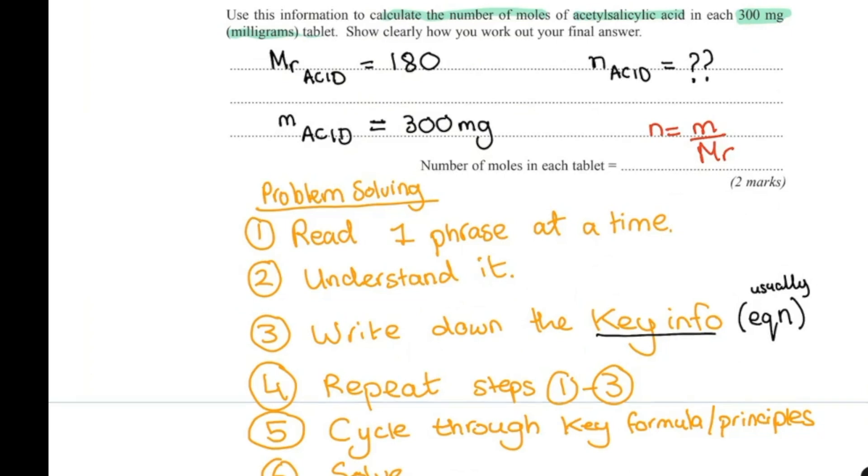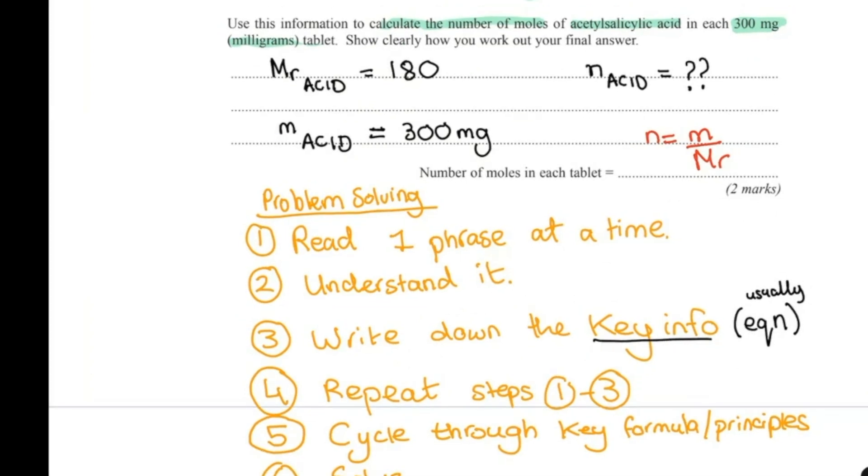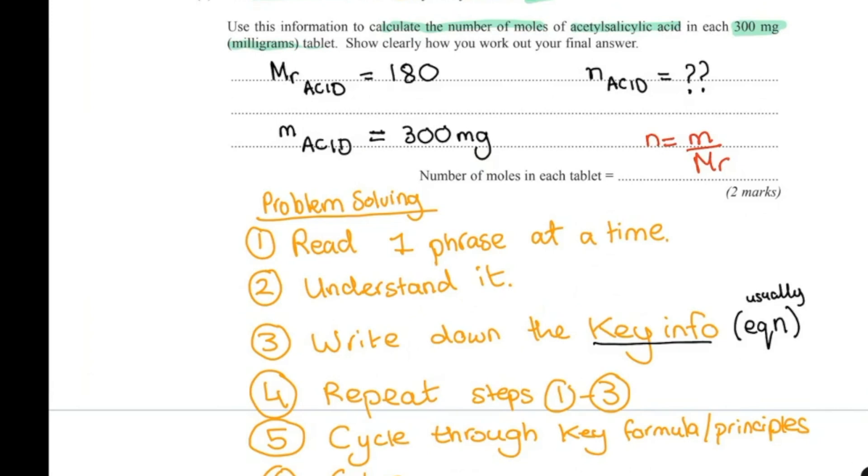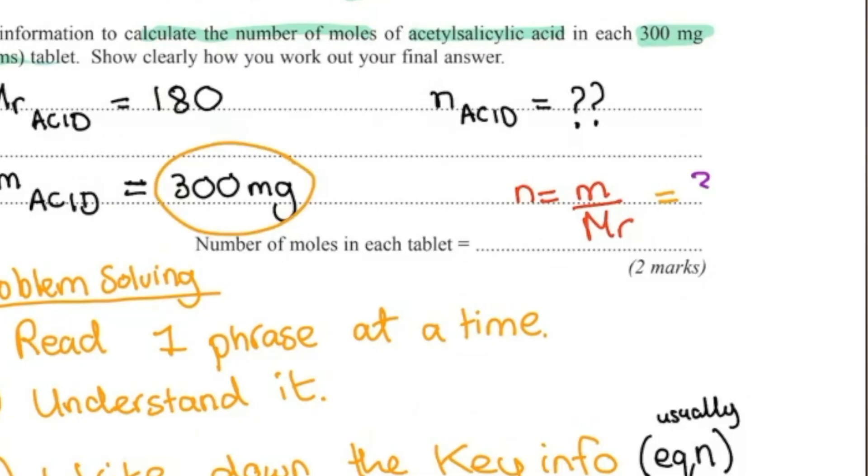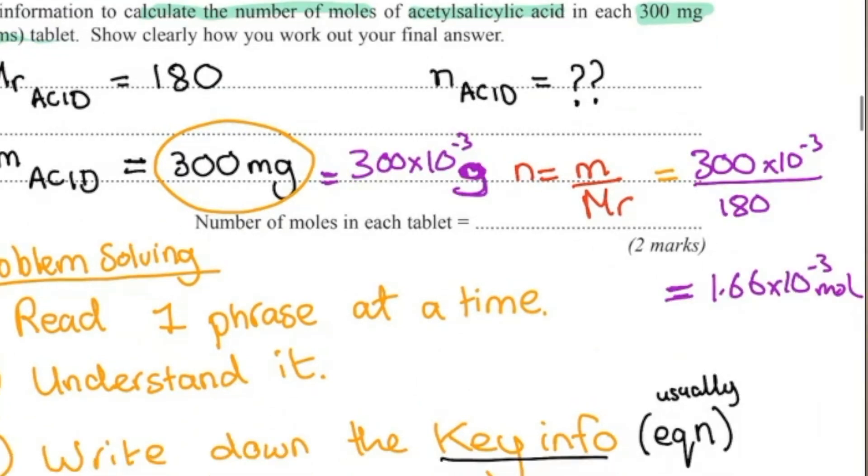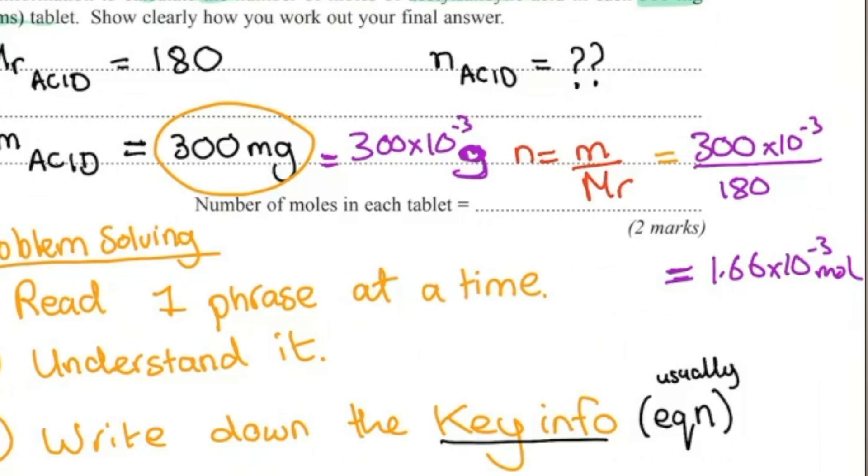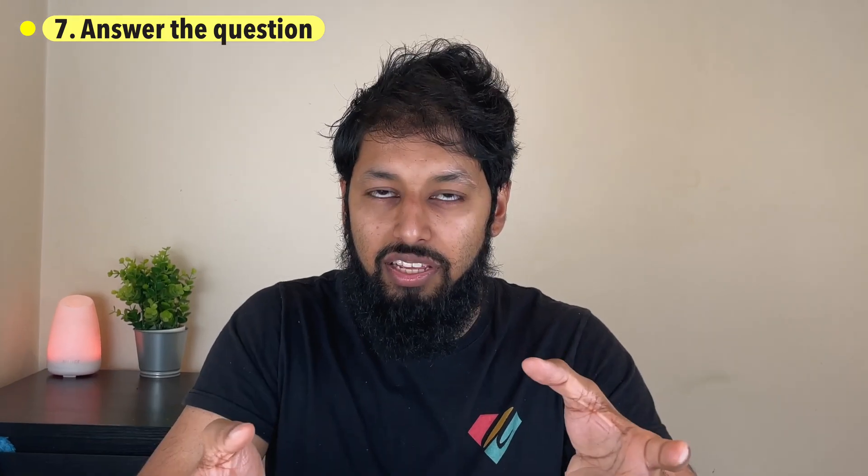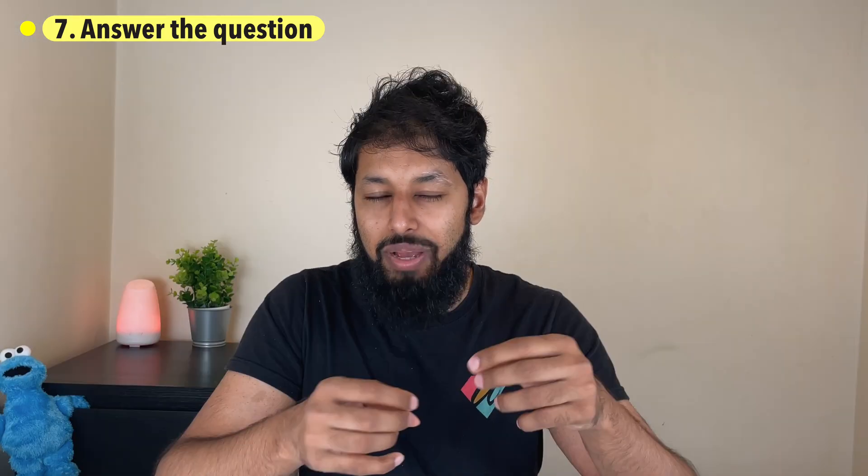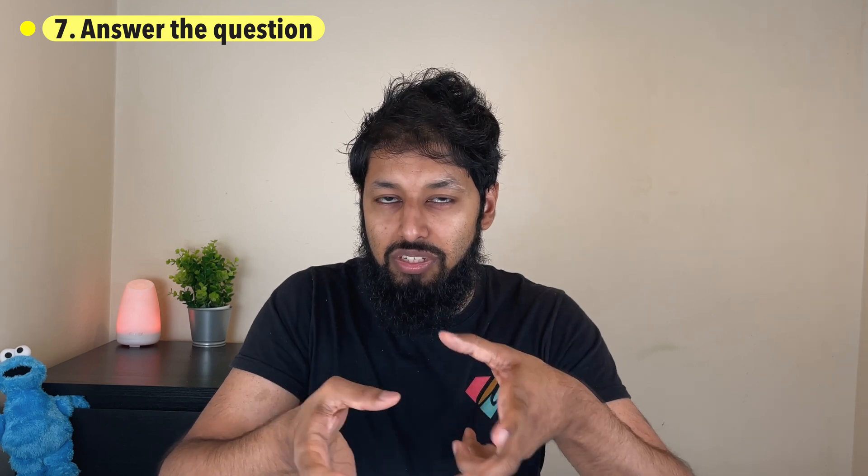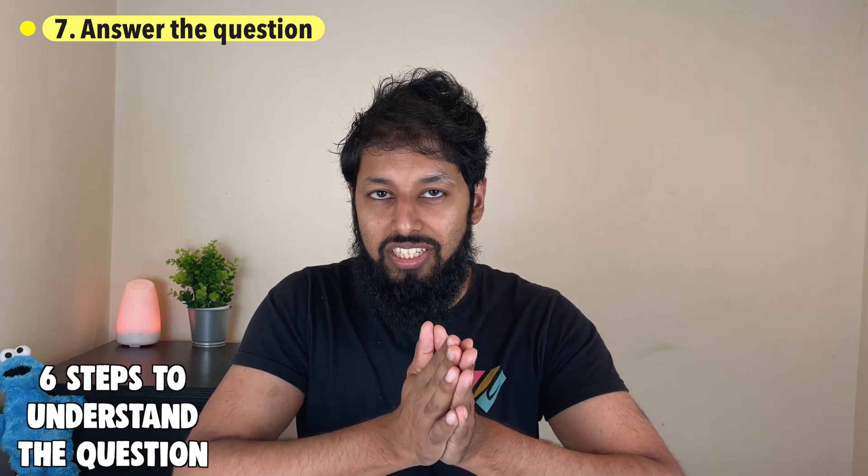A big part of science exams, right, is these long worded questions. And the way you break them down is like this. All we're going to do now is we're going to substitute the numbers in. Until step seven, here's the funny thing, we hadn't done any science at all. Maybe in step six you could say we did science by applying, writing down the formula, but actually applying the numbers into the formula is done in step seven. Six steps were all done to understand the question.